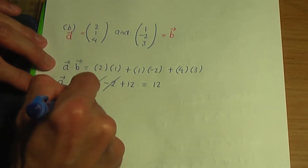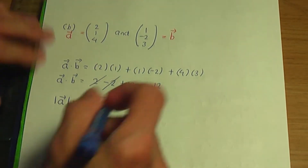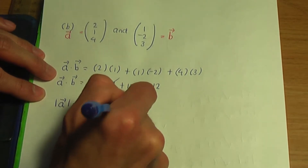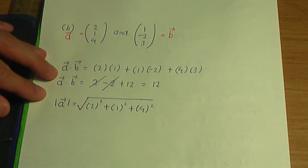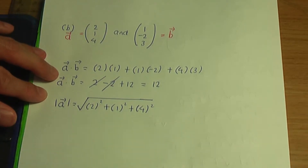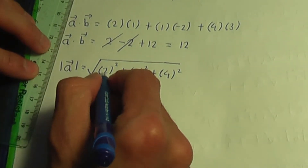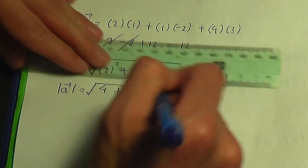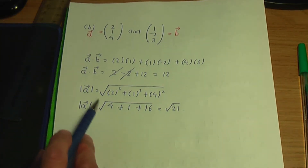Now let's work out the modulus of A. It's a square root calculation: square the components and add. So it's the square root of two squared plus one squared plus four squared, which is the square root of four plus one plus sixteen. That gives the square root of twenty-one, which is the modulus or magnitude of A.